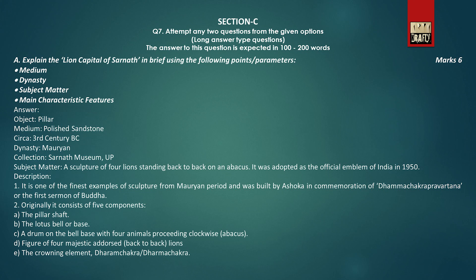In Section C, you have to attempt any two questions from the given options. These are long answer type questions and the answers to these questions are expected in 100 to 200 words. In question number seven A, you have to explain the lion capital of Sarnath. This question carries six marks.